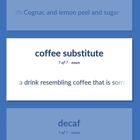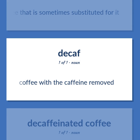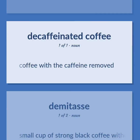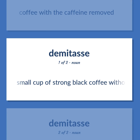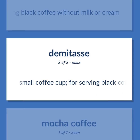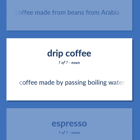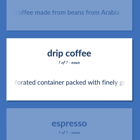Coffee substitute: a drink resembling coffee that is sometimes substituted for it. Decaf: coffee with the caffeine removed. Demitasse: a small cup of strong black coffee without milk or cream; also a small coffee cup for serving black coffee. Mocha java: a superior dark coffee made from beans from Arabia.